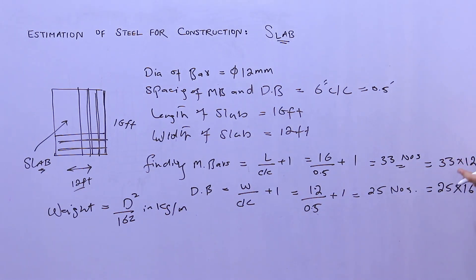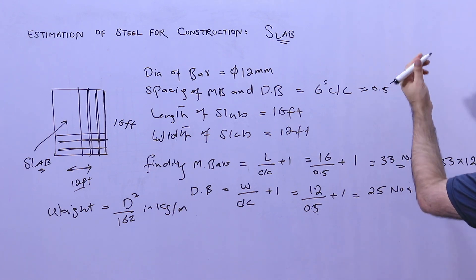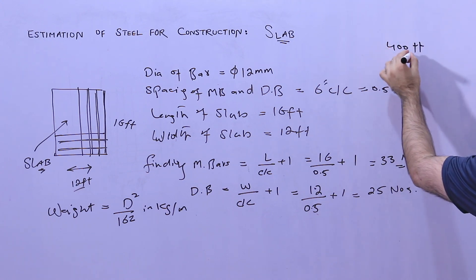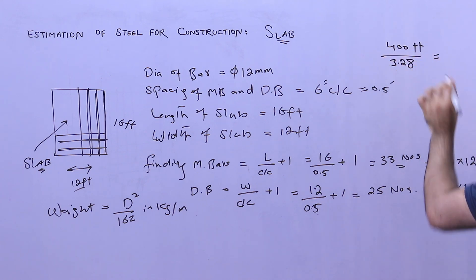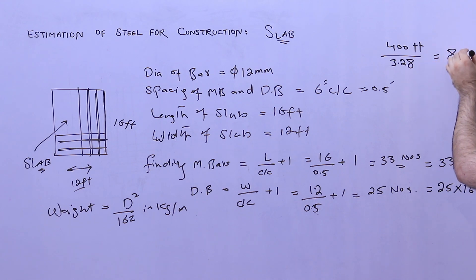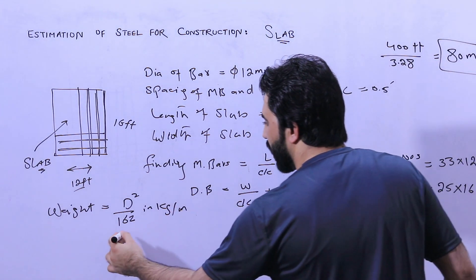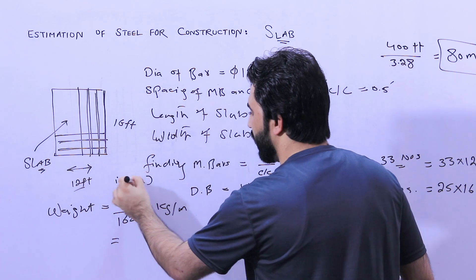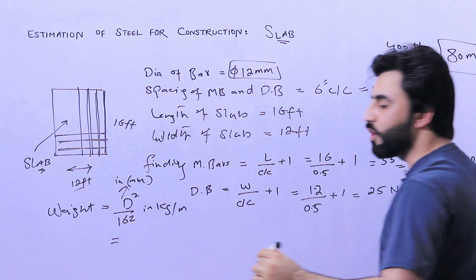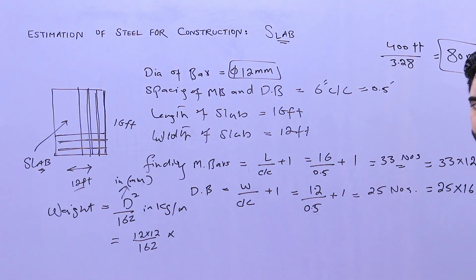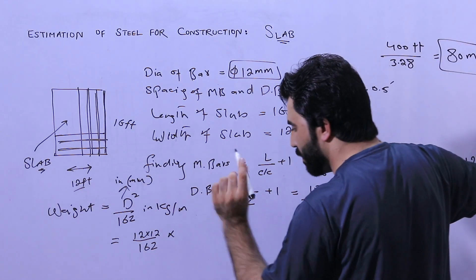For example, suppose we have a total length of 400 feet for main bars and distribution bars combined. Divide 400 by 3.28 to convert to meters — let's say we get approximately 80 meters as an example. I'm just guiding you with this example. So the D squared value: D is 12 millimeters, so 12 multiplied by 12 divided by 162, multiplied by the total length in meters, which is 80.